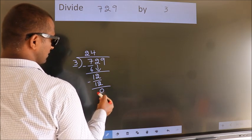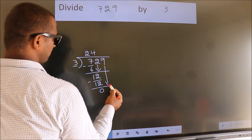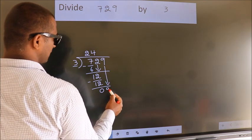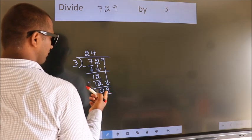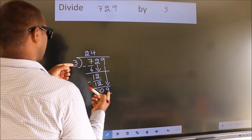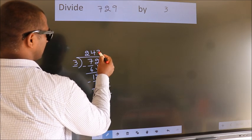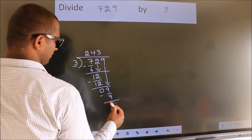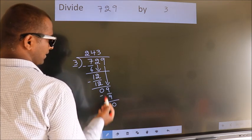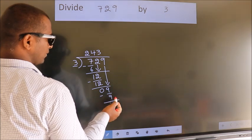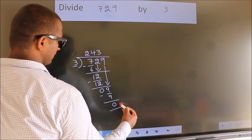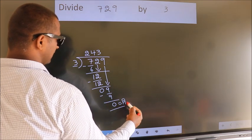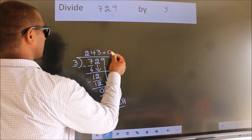After this bring down the beside number. So 9 down, so 9. When do we get 9 in 3 table? 3 times 3 is 9. Now we subtract. We get 0. No more numbers to bring it down, so we stop here. This is our remainder. This is our quotient.